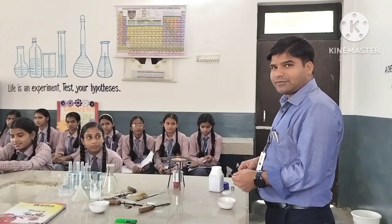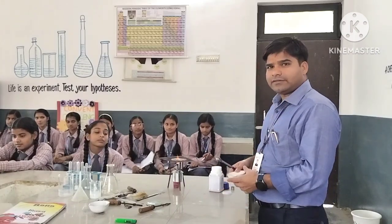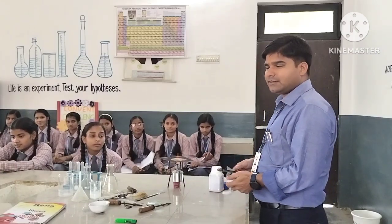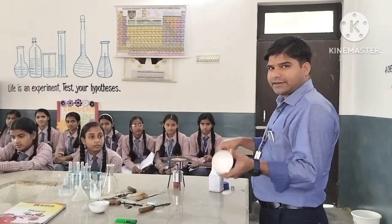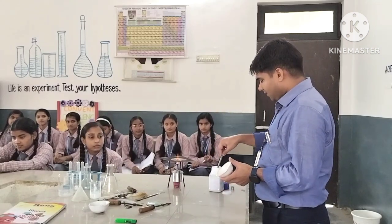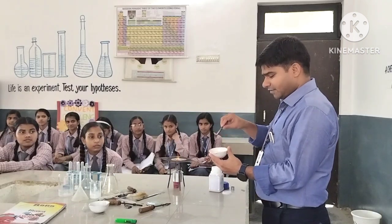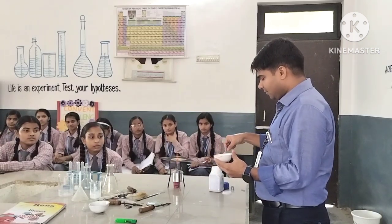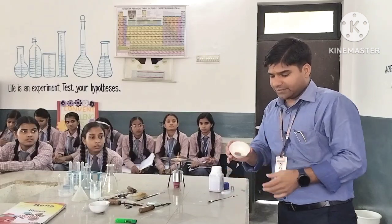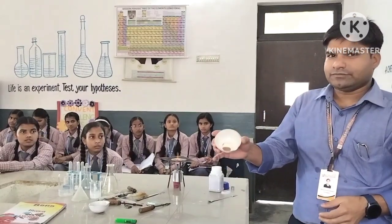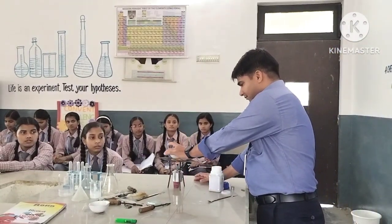Today I am performing Activity 1.1 NCERT Science class 10th chapter 1. We take a china dish and add a small quantity of copper powder, which is brown in color, and then heat it.